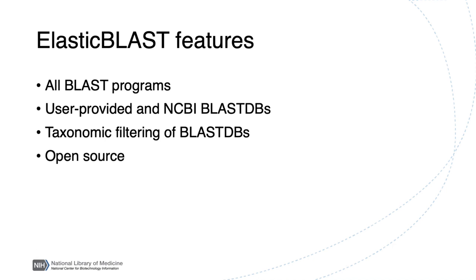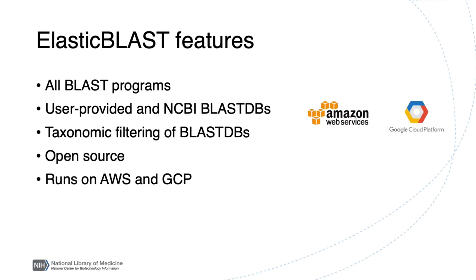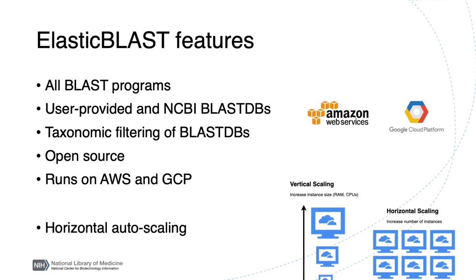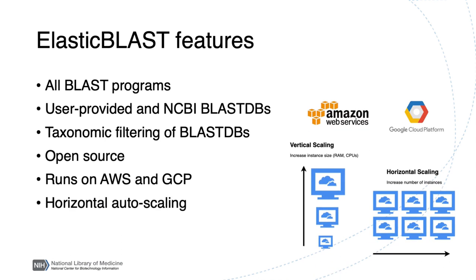Elastic Blast is open source software and runs on major cloud service providers. It supports horizontal autoscaling, which is the ability to adjust the number of compute instances automatically up to a predefined limit based on its workload.